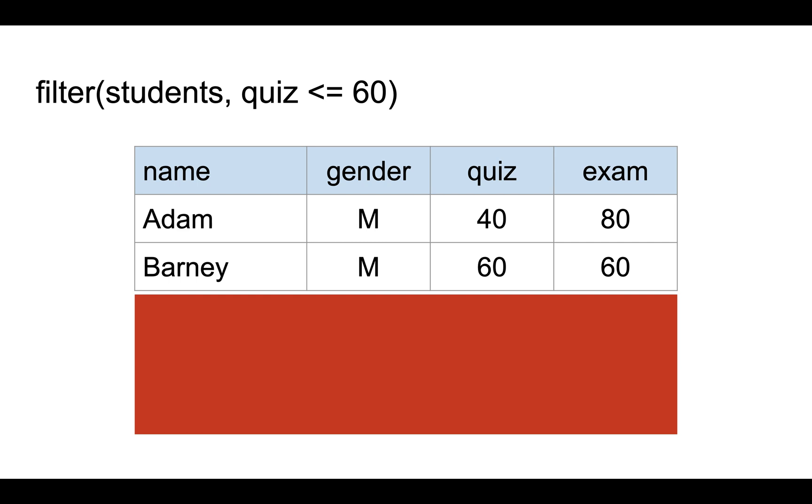The next function is filter. Basically, it allows you to keep a subset of the rows. For example, if you want to keep those students who scored less than 60 points in the quiz, this is how you do it using filter, the name of the data frame, and the condition for selecting the rows. And this red or orange rectangle shows you the rows that were not selected.